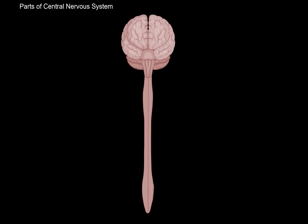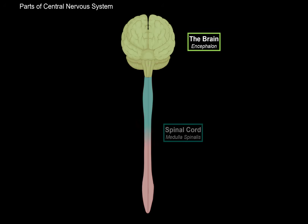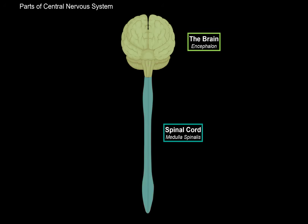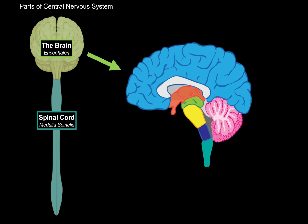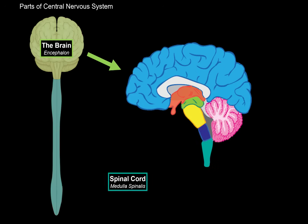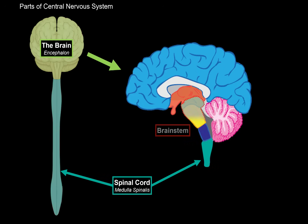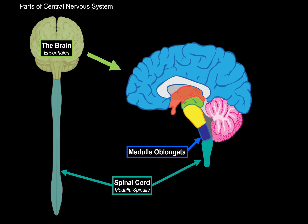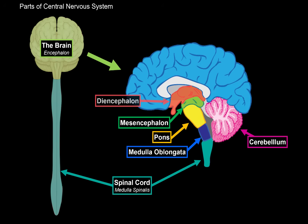The central nervous system consists of two parts: the encephalon and the spinal cord. The encephalon is further divided into specific parts. We have the brain stem, which consists of the medulla, pons, and the midbrain, or the mesencephalon. We have the cerebellum, then the diencephalon and the telencephalon.